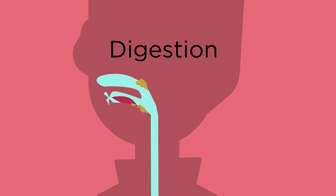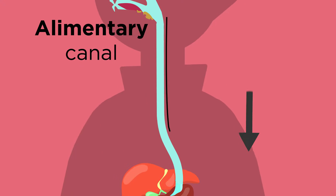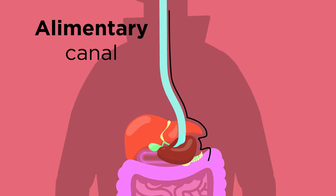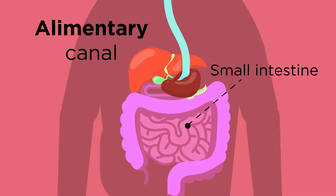Digestion takes place in lots of places along the alimentary canal, and absorption happens in the small intestine, which is found just after the stomach along the length of the digestive system.